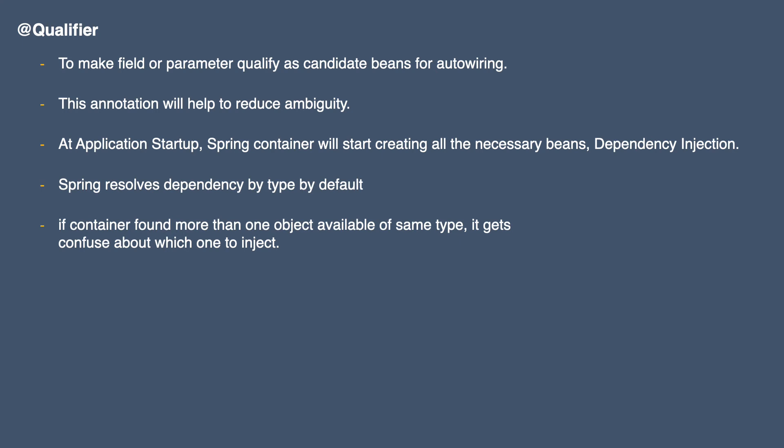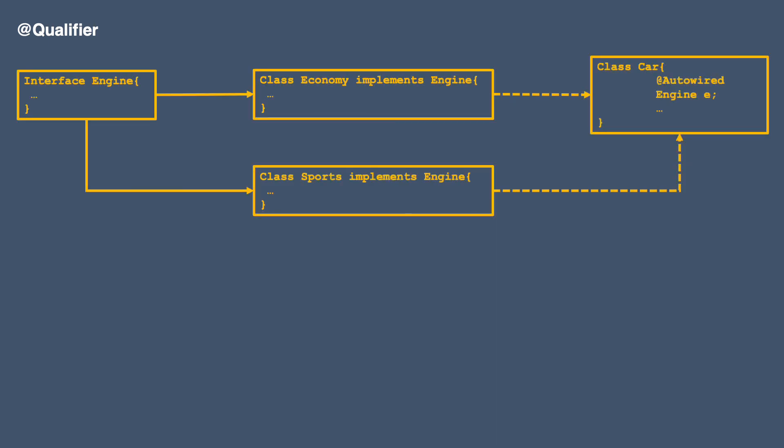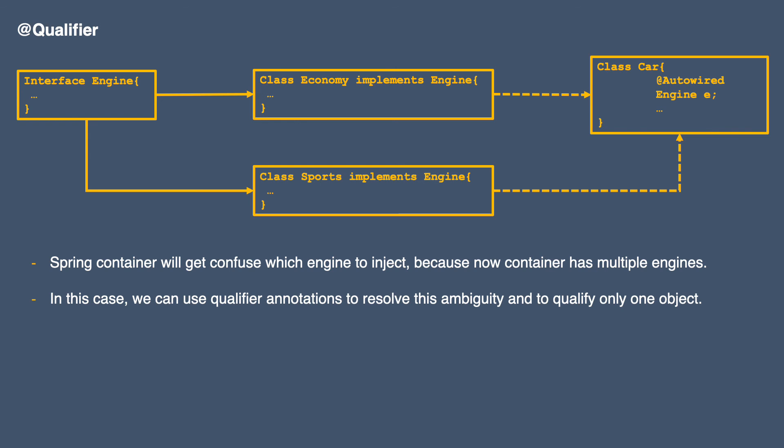Take our previous example of a car. We have one interface called Engine, which was implemented by a class EconomyEngine. We have one EconomyEngine and one Car class, and this Car needs an Engine — so Car is dependent on Engine. When we create the Car, EconomyEngine gets injected. But imagine we have two engines: EconomyEngine and SportEngine. When the Spring container starts and performs dependency injection, it finds two engines of the same type and gets confused about which one to inject.